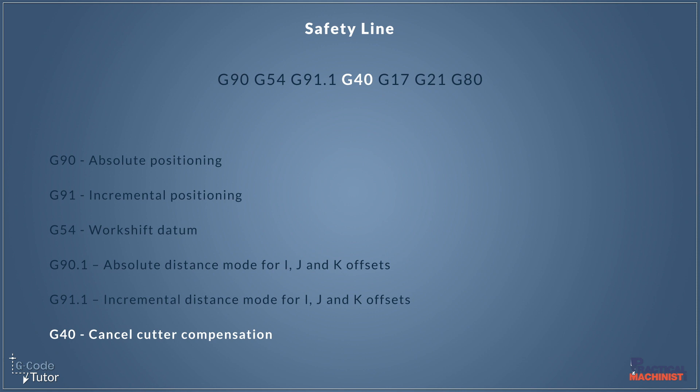It's also important to clear any cutter compensation that may be active. If we stop a machine halfway through a roughing cycle where we were using cutter compensation and then call upon a different part — say a drilling cycle — it would try to add that cutter compensation to the drilling cycle. So it's always better and safer to cancel any cutter compensation at the beginning of each section of code, and then after this we can add any cutter comp that we may require.